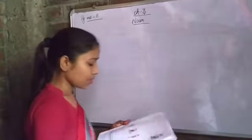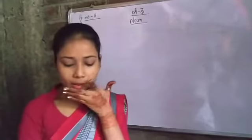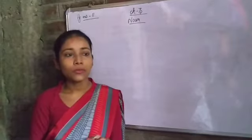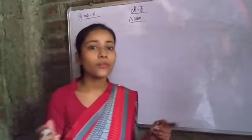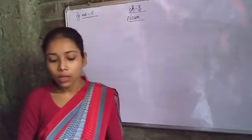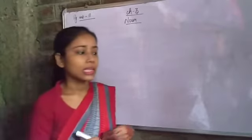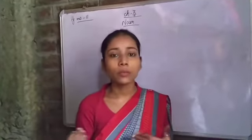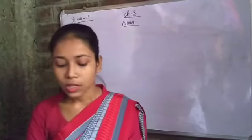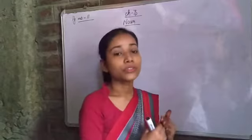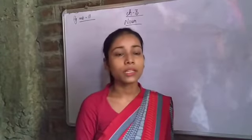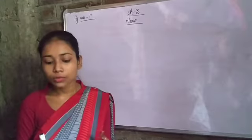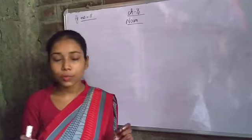Now I will talk about gender. In this world we mostly talk about two genders: male and female. In every family we have father, mother, brother, sister. Father is male, mother is female, brother is male, sister is female. Gender means — what we call masculine and feminine in English. Nouns that name male people or animals belong to masculine gender.